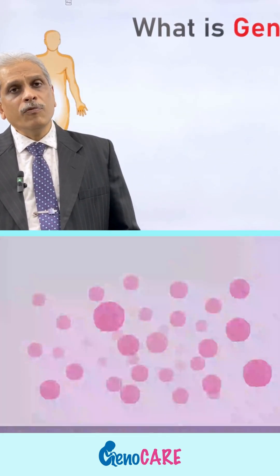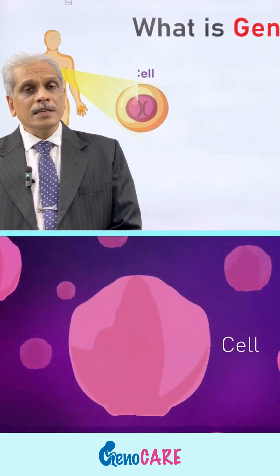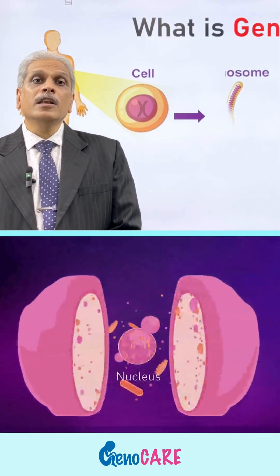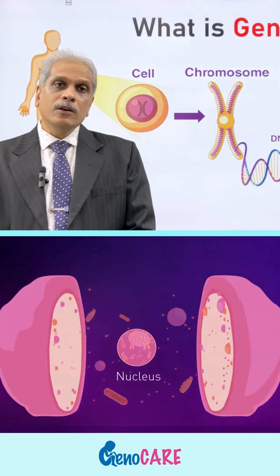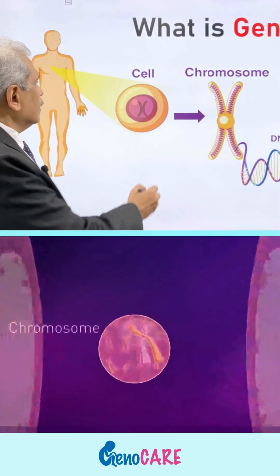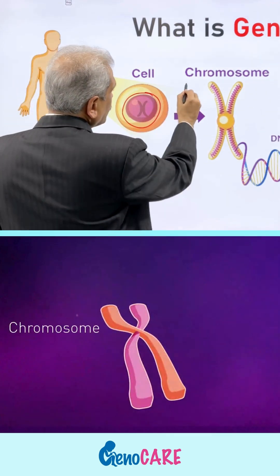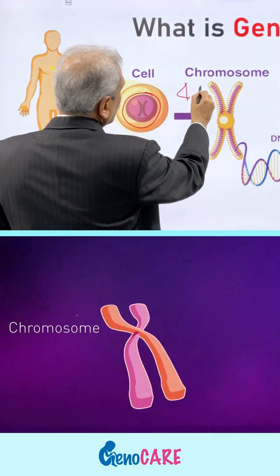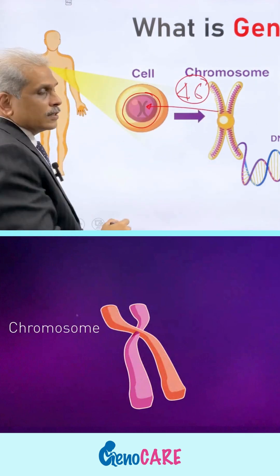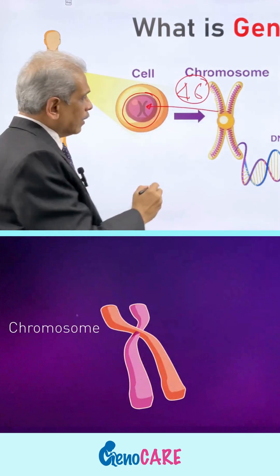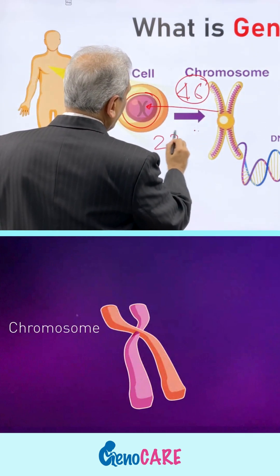Our whole body is made up of trillions of cells, and in each cell there is a nucleus. In that nucleus there are 46 chromosomes packed inside — that is, there are 23 pairs.